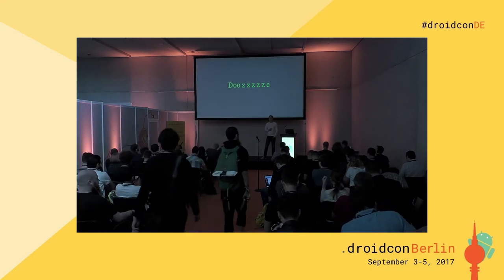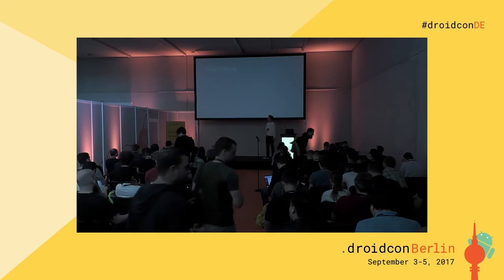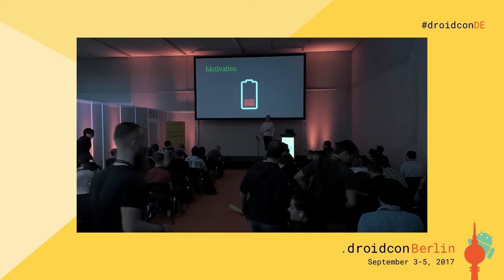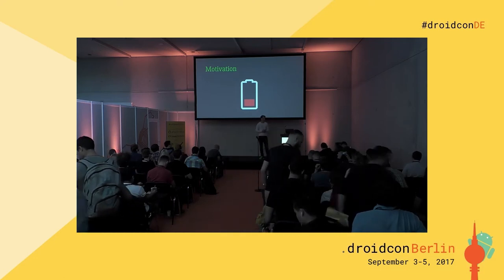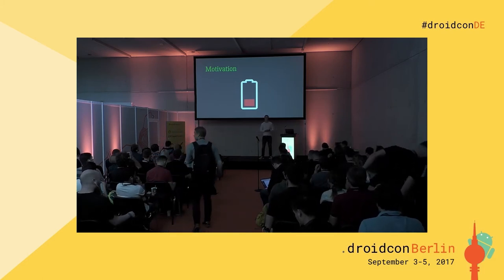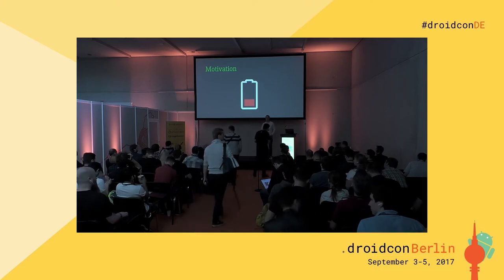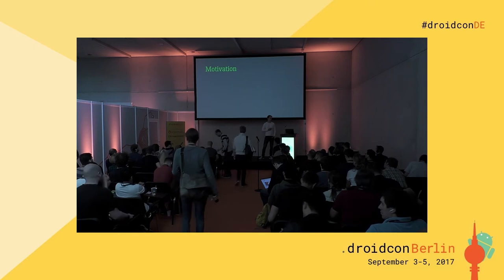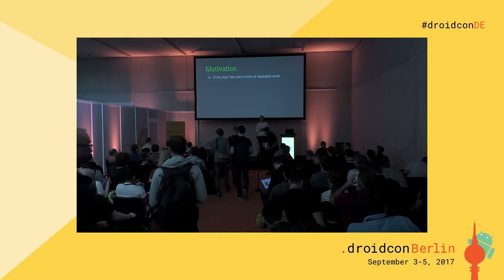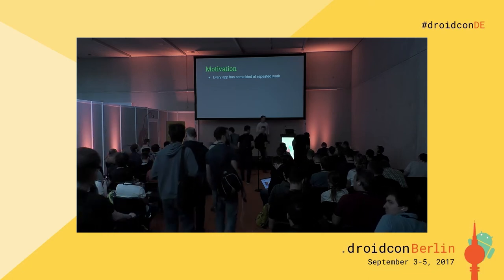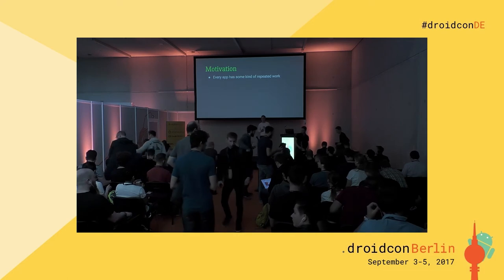Now let's get back to the topic: Doze. The reason I'm standing here today is probably this little low battery icon. Nobody likes to see it, and it always appears at the worst time. The reason is not only that devices have too small batteries, but also the implementation of apps. We, as developers, can do a lot to avoid the battery running out so fast. One major reason is repeated work — every app has some kind of repeated work it needs to do over and over again, like a synchronization job or a cleanup task.